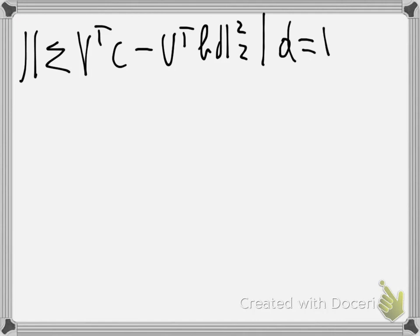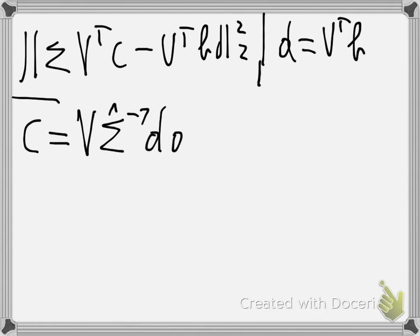Now, let's just rewrite that here. We can define some vector d to be equal to U transpose b. You will see why we do that. And also, the solution of our least square problem, which are contained in the vector c, the solution will be given by the following: V times sigma hat inverse, I will explain that just after, times d zero.